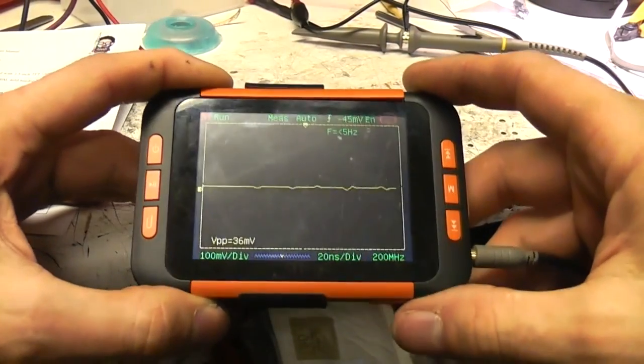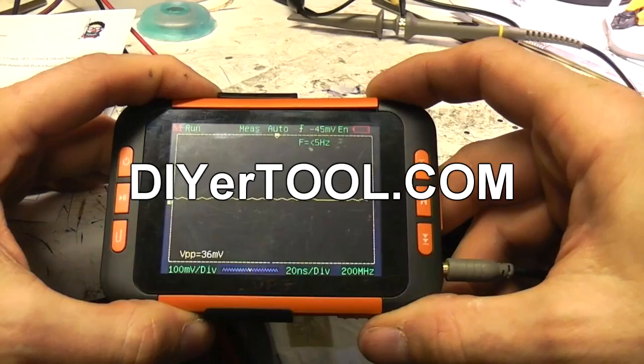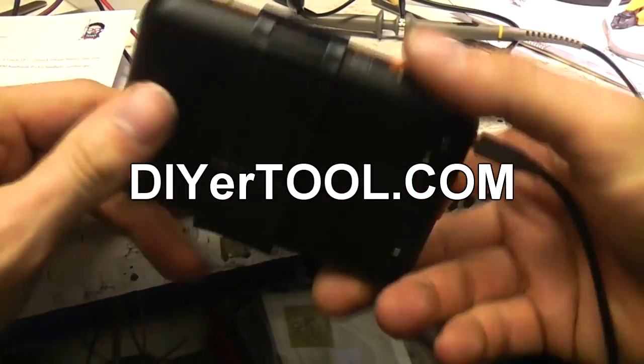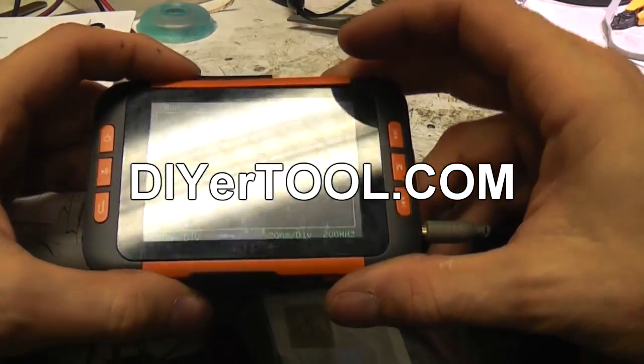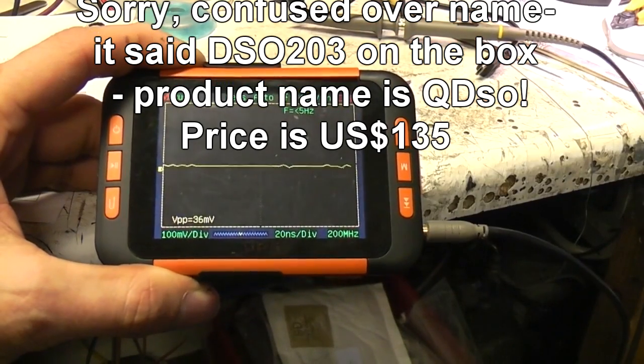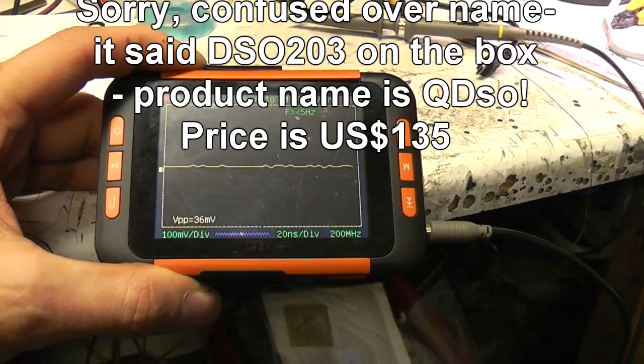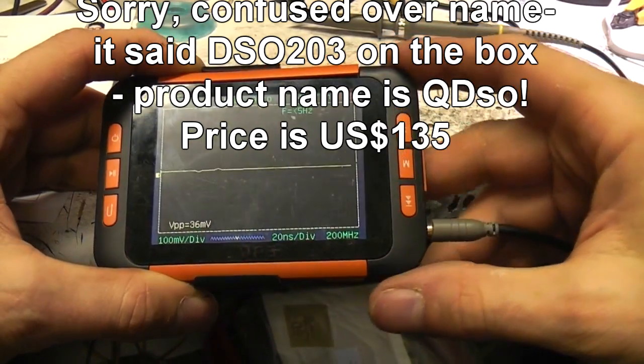Hi, quick review time today. The guys at DIYatool in China sent me this little scope to have a look at. It's the DSO203. I think there's two versions, maybe just different bandwidths. I was going to give it a fairly quick overview because it doesn't really warrant a full in-depth review.